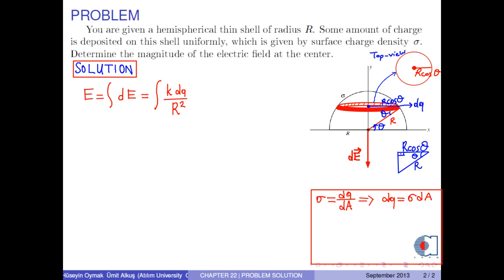According to the figure, dA is calculated by the formula 2 pi r times cosine theta times r times d theta. Or dq is written to be sigma times 2 pi r squared cosine theta d theta.